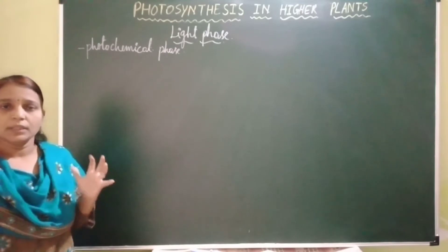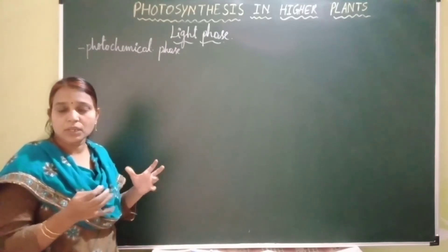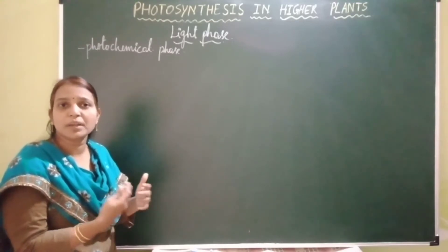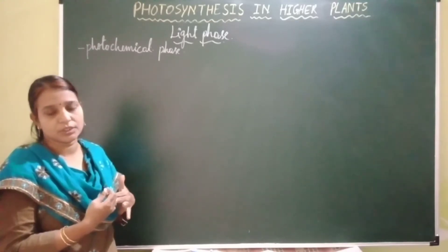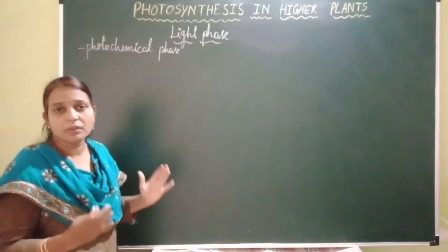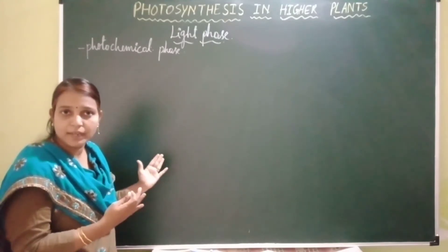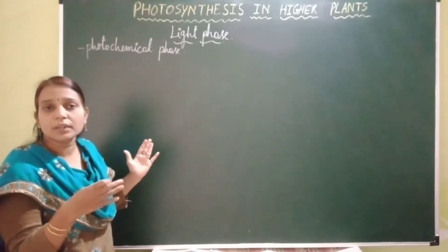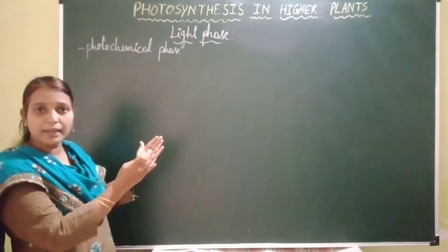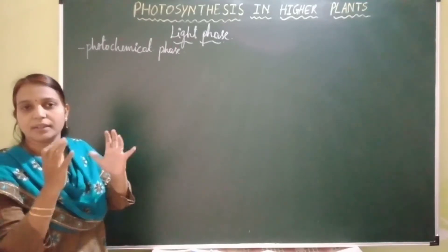During light phase, the pigments present in thylakoid membranes of the chloroplast absorb sunlight and convert that sunlight into chemical form of energy, that is ATP and NADPH. This chemical form of energy, which is synthesized during light phase, is utilized during dark phase for the conversion of atmospheric carbon dioxide into carbohydrate, that is food.